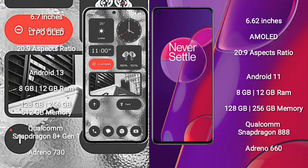Nothing Phone 2 runs on the Android 13 operating system. OnePlus 9RT runs on the Android 11 operating system.